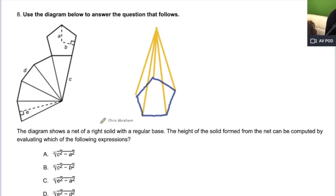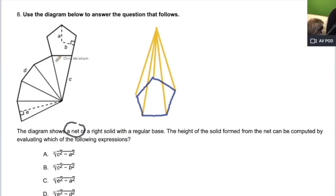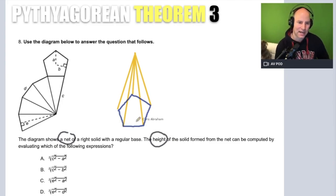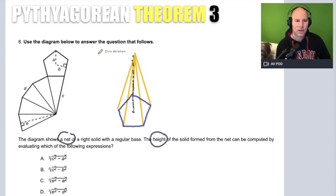The problem says: the diagram shows a net of a right solid with a rectangular base. So this is a net of this three-dimensional shape. It says the height of the solid formed from the net can be computed — so we're trying to find the height, which is the line that goes directly up the shape.